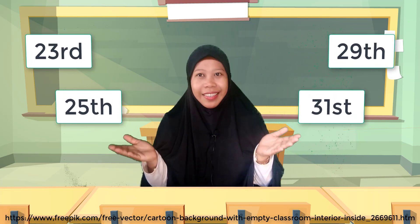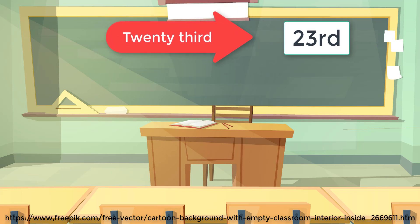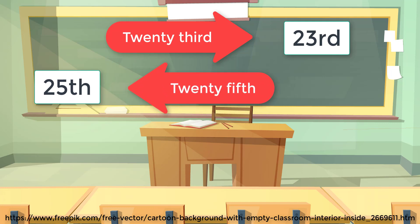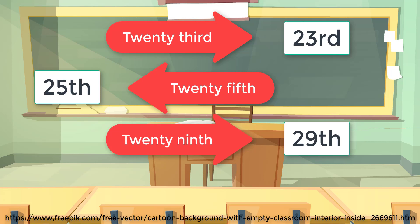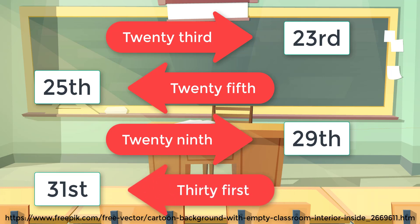Now, how do you say these numbers in English? Let's check. Twenty-third. How about this one? Twenty-fifth. And how about this? Twenty-ninth. And the last one? Thirty-first.